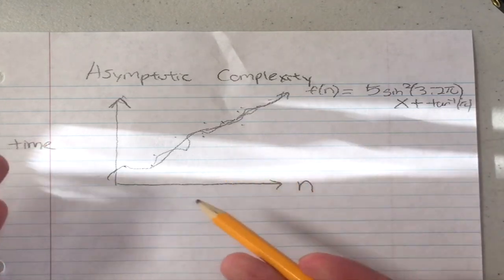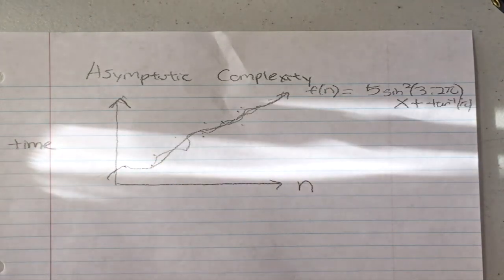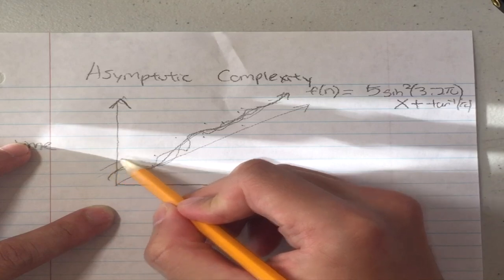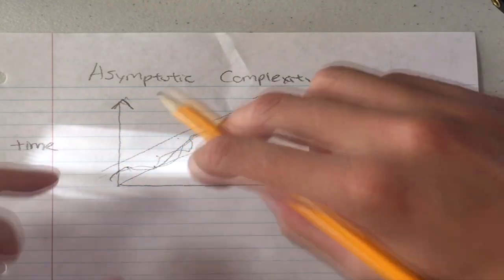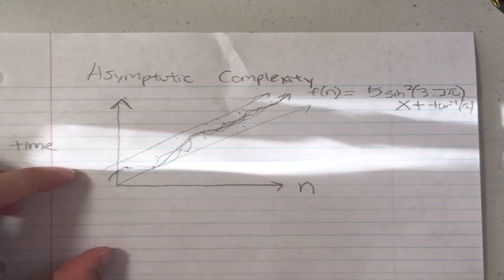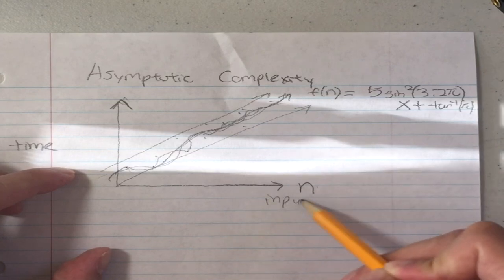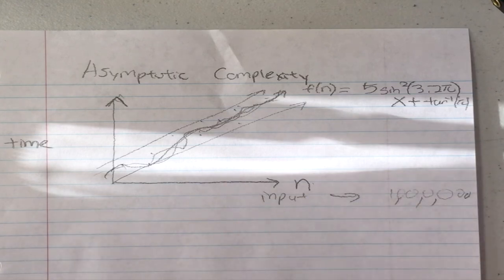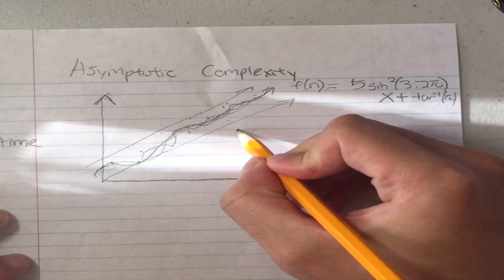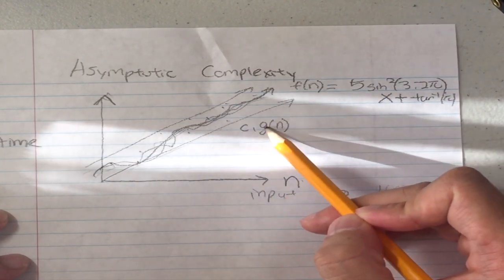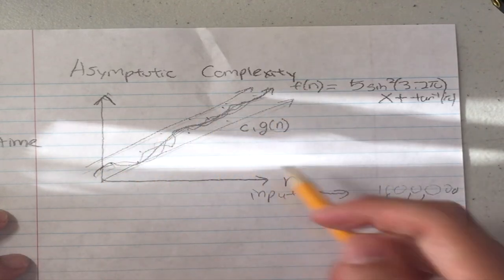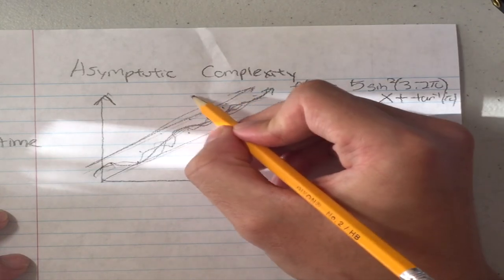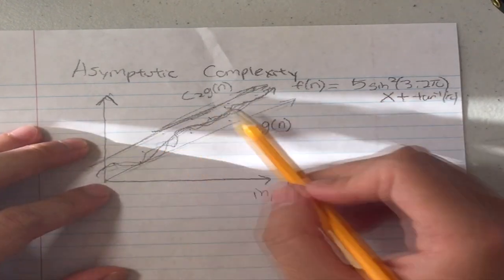This function might have some ridiculous constants that are hard to analyze. What computer scientists do is find a boundary — they bound the function between two lines. If we bound f(n) between these two lines, it is much easier to analyze. When our input size gets very large — a million users, a billion people — it's much easier to find the time. We call these bounds c1·g(n) and c2·g(n).